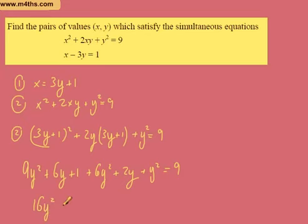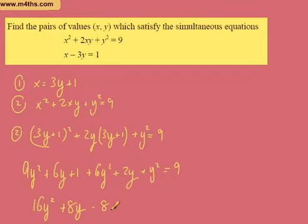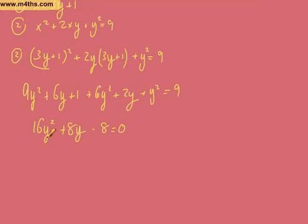6y and 2y gives plus 8y. And then I've got 1 and a 9, so dragging it all over and making it negative 8, that equals 0. Now we can divide through by 8, so we have 2y squared plus y minus 1 is equal to 0.